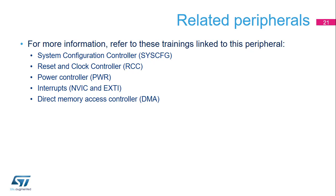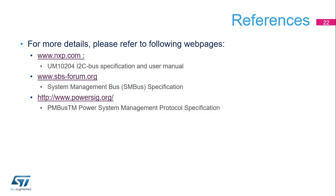For more information related to this peripheral, you can also refer to these trainings: System Configuration Controller, Reset and Clock Controller, Power Controller, Interrupts Controller, and Direct Memory Access Controller. For more details, please refer to the I2C bus specification and user manual from the NXP website. The SMBUS specification can be found in the Smart Battery System Implementers Forum, and the PMBUS Power System Management Protocol specification can be found in the Power Management Bus Implementers Forum.